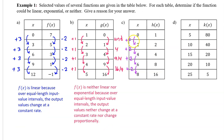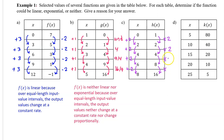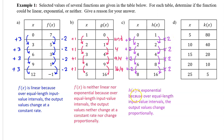For Part C, we again have equal length input value intervals. If h of x is linear, the output values will change at a constant rate — a common difference. The output values do not change at a constant rate, so h of x is not linear. If h of x is exponential, the output values should change proportionally — a common ratio. 2 divided by 1 is 2, 4 divided by 2 is 2, 8 divided by 4 is 2, and 16 divided by 8 is 2. The output values are changing proportionally with a common ratio of 2. H of x is exponential because over equal length input value intervals, the output values change proportionally.